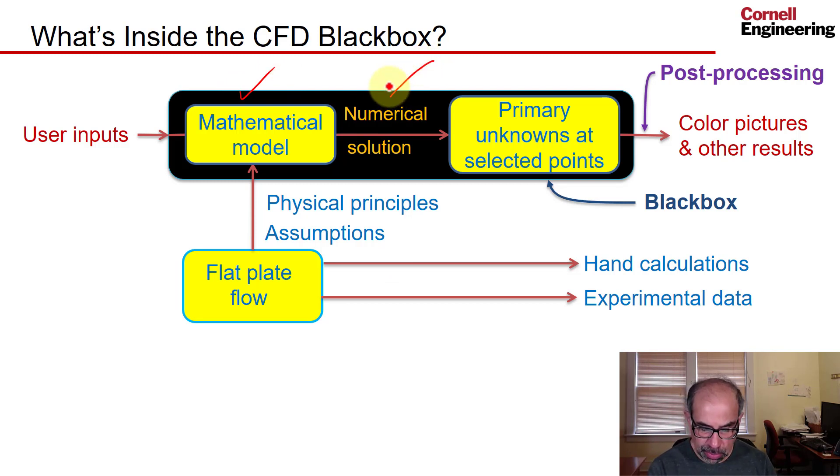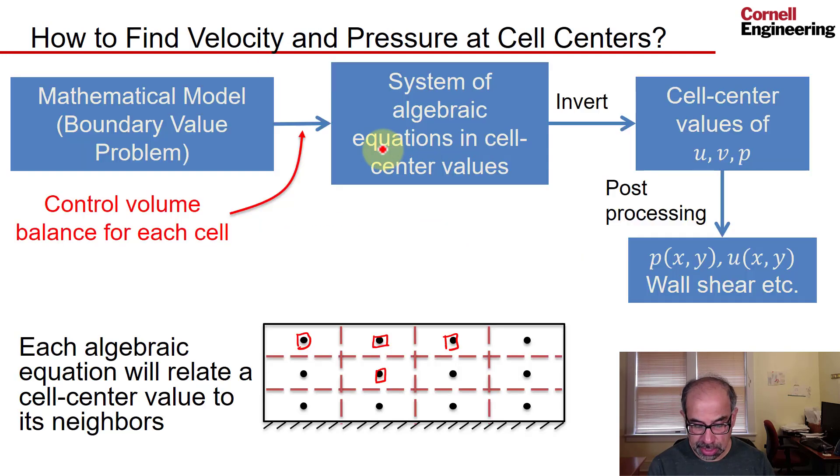Let's quickly take a look at how the numerical solution strategy changes. The answer is it doesn't. Now, in addition to finding the velocity and pressure at the cell centers, we also need to find the temperature at the cell centers.